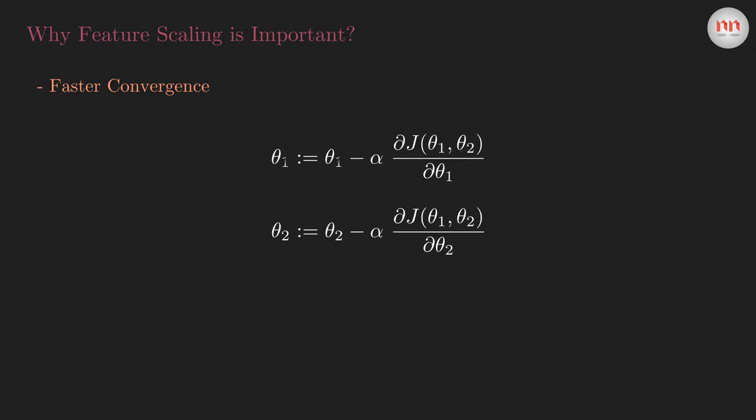Why do we even care about feature scaling and normalization? Well, the first reason is to achieve faster convergence. Take the good old gradient descent algorithm. Assume that we have two features, x1 and x2, and theta1 and theta2 are the corresponding weights. I'm ignoring the bias term here. If we assume the least square cost function, the weight update steps will look something like this.